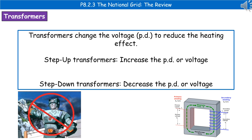There are two types of transformer used in the National Grid: step-up transformers, which increase the potential difference or voltage, and step-down transformers, which decrease the potential difference or voltage.